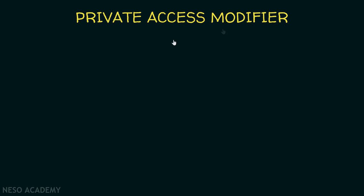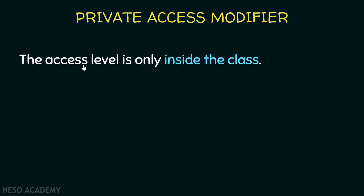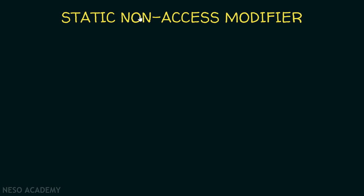Now let's talk about the private access modifier. This is also an access modifier, and if we use private, the access level is only inside the class. Everything that is private cannot be accessed from outside the class.